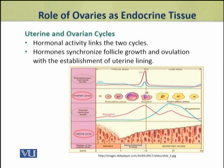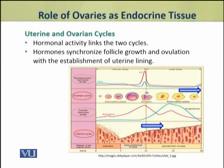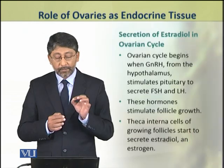These hormones — estrogen and progesterone — synchronize the follicle growth and ovulation with the establishment of the uterine lining. In this way, follicle growth and ovulation occurring in the ovarian cycle are paralleled by the growth of the uterine lining in the uterine cycle, and this synchronization is carried out by progesterone and estrogens.